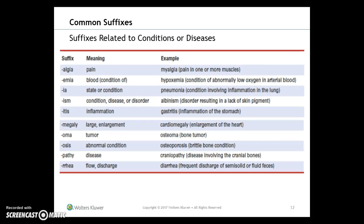Now moving on to suffixes. Like a prefix, a suffix modifies the meaning of the word root to which it's joined. Suffixes can also be learned in groups based on similar or opposite meanings. Many medical terms have a suffix and a combining form that together form a noun or adjective. Examples: -algia for pain (myalgia); -emia for blood (hypoxemia); -ea (pneumonia); -ism (albinism); -itis for inflammation (gastritis); -megaly for large (cardiomegaly); -oma for tumor (osteoma); -osis for abnormal condition (osteoporosis); -pathy for disease (craniopathy); -rrhea for flow or discharge (diarrhea).